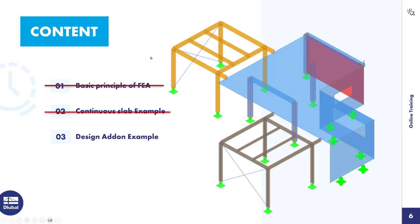For today's content, we will be going over the design add-on example. Just a brief overview of what we did yesterday: we went over the basic principles of FEA, then an introduction to the program RFEM6, and then we modeled a continuous slab. This included going over the best ways to enter FE mesh, how to model basic surfaces and members, and we also went over results. I encourage you to check out that recording posted on our website from yesterday.